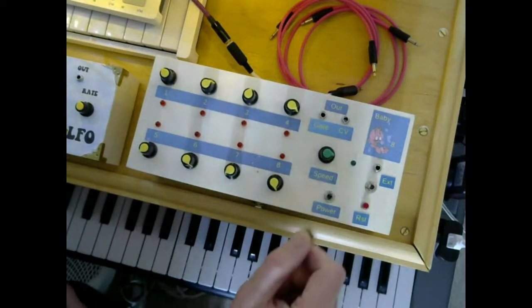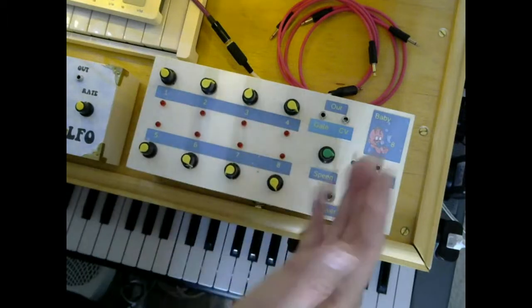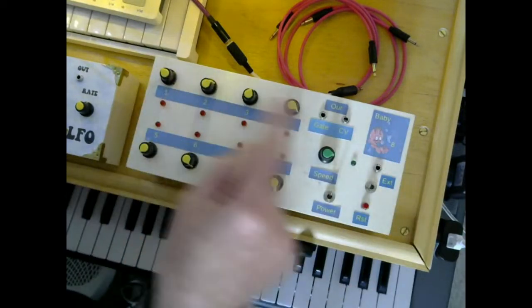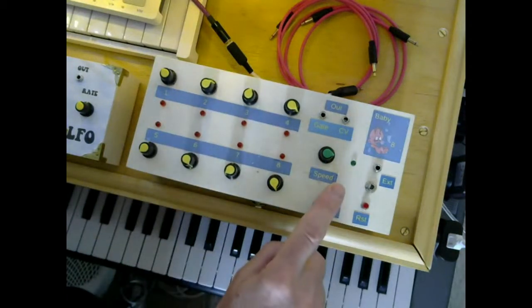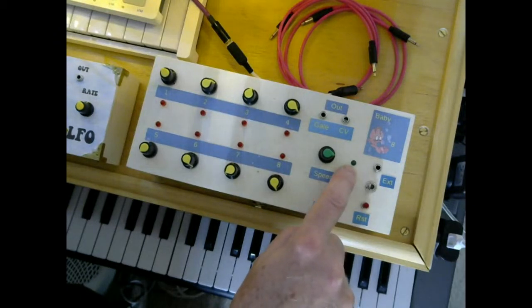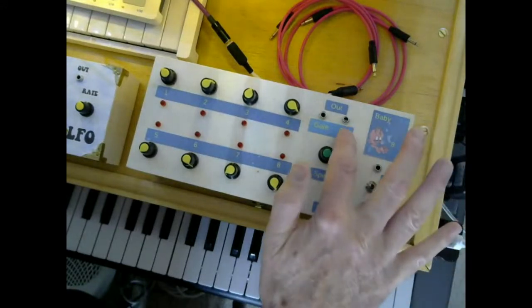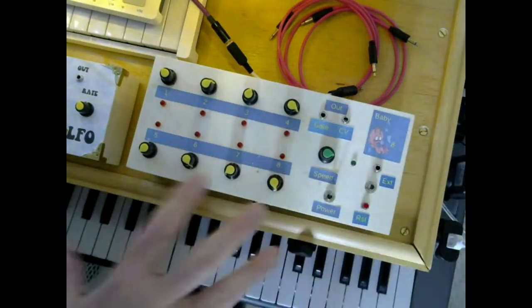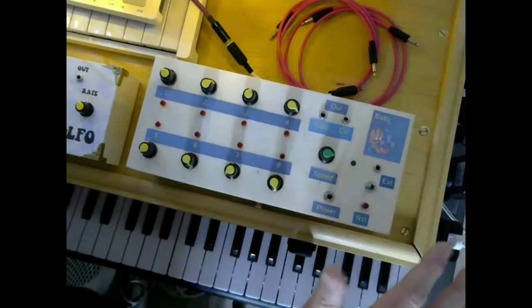The green knob is the speed of the clock which steps the sequence through. We've got a power on/off switch here and there's a green LED which gives me an indication of the speed that the clock's operating at. And there's control voltage out. Now on the original design I built that was it, that was all the controls I had in there.